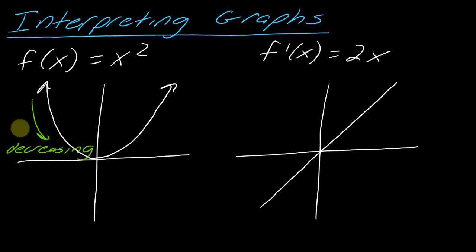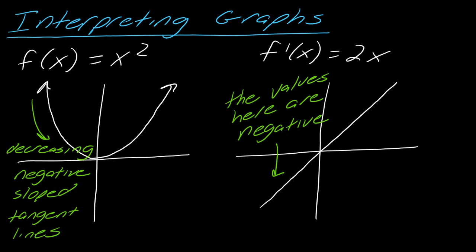So this side of the parabola, this side is decreasing. So if you think about it, if I drew any tangent line on this side of the graph, these would all be negatively sloped tangent lines. And so that's what's telling you that this is decreasing. So now what I want you to do is look at the actual graph of the derivative.